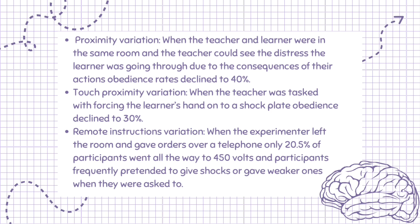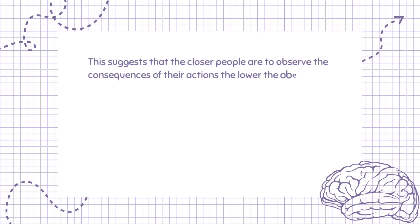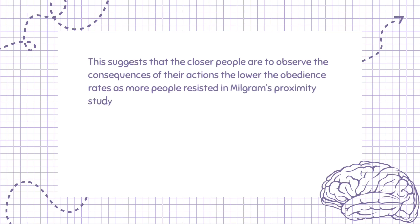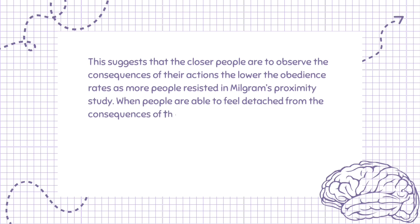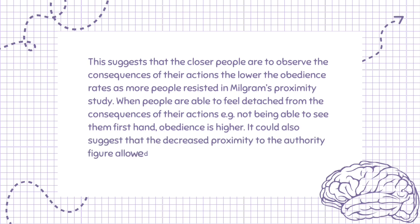Participants frequently pretended to give shocks or gave weaker ones when asked. This suggests that the closer people are to observing the consequences of their actions, the lower the obedience rates, as more people resisted in Milgram's proximity study. When people are able to feel detached from the consequences of their actions — e.g. not being able to see them firsthand — obedience is higher. It could also suggest that decreased proximity to the authority figure allowed participants to return to a more autonomous state, i.e. an agentic state.